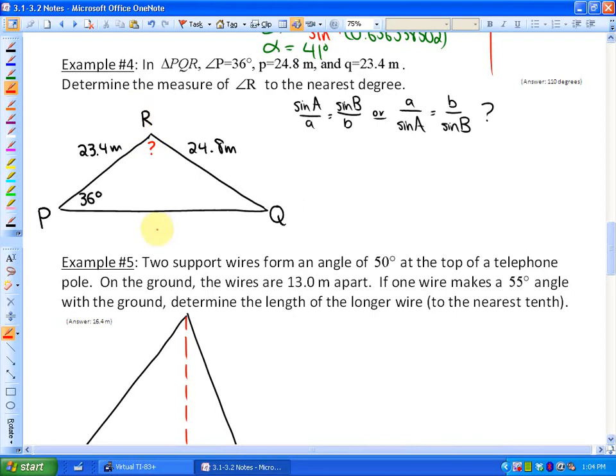Since we don't have the opposite side of angle R, we have to approach this in a problem-solving manner. To use the sine law, we have to have an angle and its opposite side. We have 36 degrees and its opposite side 24.8. Now what we're going to have to solve for next is the opposite of 23.4 meters, which is actually angle Q. That's going to help us solve for angle R.